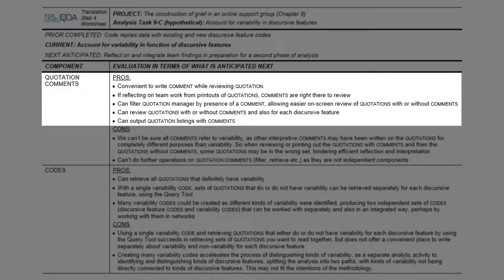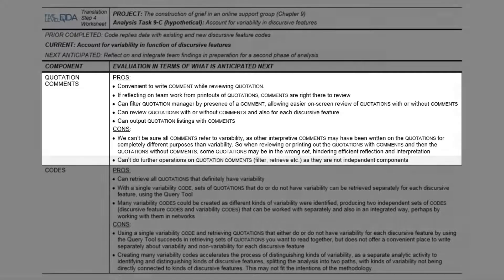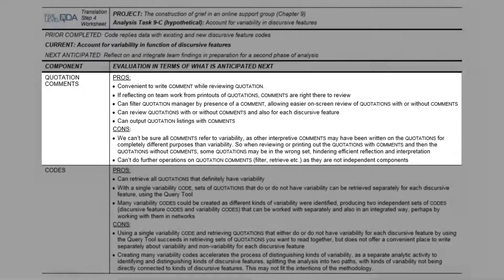However, there are a couple of disadvantages. We might well be writing other quotation comments that have nothing to do with variability, and so those quotations will appear in the wrong list, which is inefficient if you are segregating those with and without comments for focused interpretation. We also can't do anything further on the comments as they are not true independent components. But if the interpretive work we have in mind as the next anticipated step is adequately facilitated by using quotation comments, then this is something to consider.